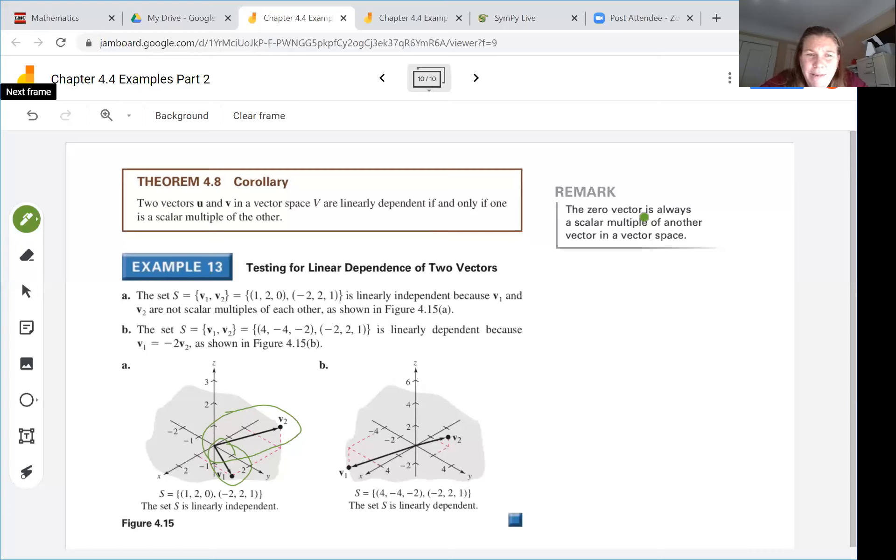Visually, if we look at the set of these vectors, four, negative four, two, and negative two, two, and one, you can see they're just scalar multiples of one another. They lay on the same line. So that's linearly dependent because you could rewrite vector V1 as negative two times V2 as we can see in this picture here. So you can always graphically check for linear dependence of two vectors.